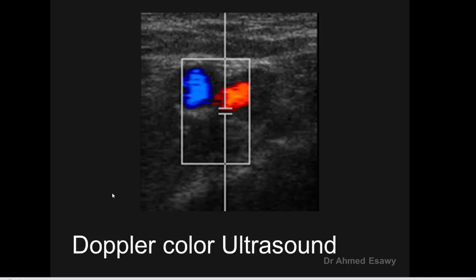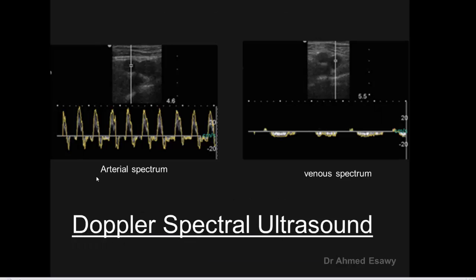Color Doppler ultrasound is the technique which uses color visualization of vessels and blood flow. Spectral Doppler ultrasound is used in the evaluation of blood vessels.